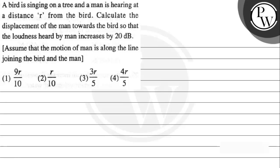Hello, let's read the given question. A bird is singing on a tree and a man is hearing at a distance r from the bird. Calculate the displacement of the man towards the bird so that the loudness heard by the man increases by 20 decibel, and the motion of the man is along the line joining the bird and the man. Option one: 9r/10, option two: r/10, option three: 3r/5, option four: 4r/5.